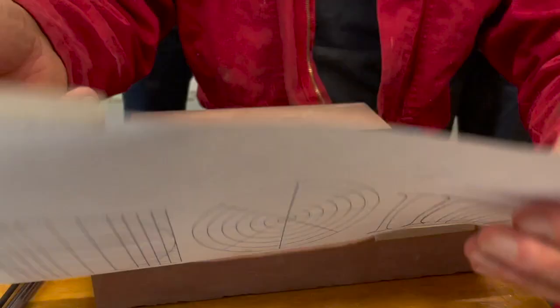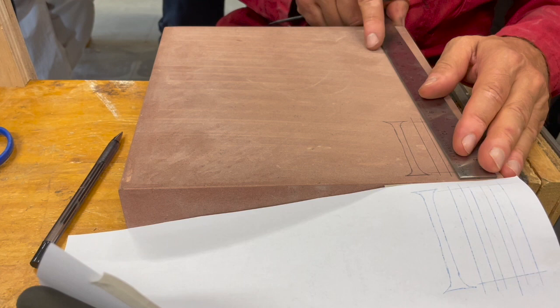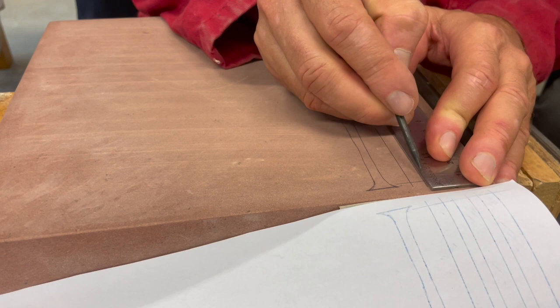Now we have transferred this. These very straight ones you can mark like this and now it's important not to overshoot because whatever you overshoot you will see on the stone and you just mark it like this.